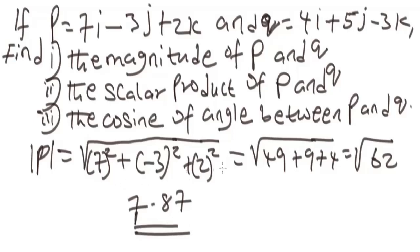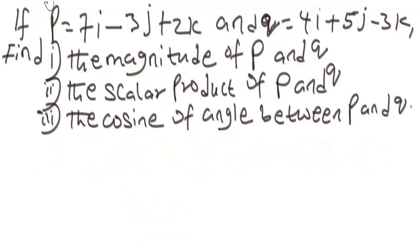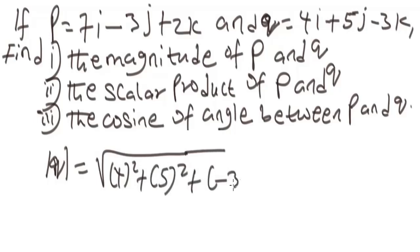The magnitude of vector Q will be square root of 4 square, plus 5 square, plus minus 3 square. If we simplify, we are going to have square root of 4 square is 16, plus 5 square is 25, plus minus 3 square is 9.